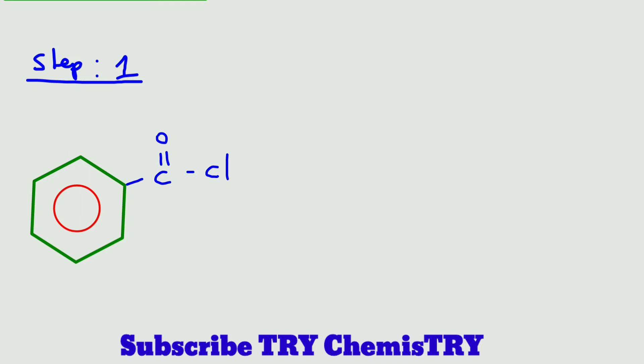Let's discuss the mechanism of the Rosenmund reduction. There are two steps involved in it. In the first step, benzoyl chloride reacts with palladium. We know that chlorine is a highly electronegative element.